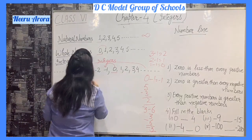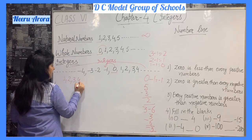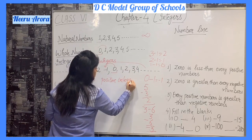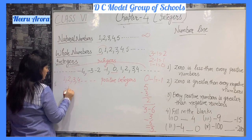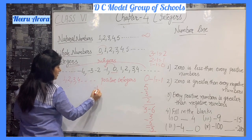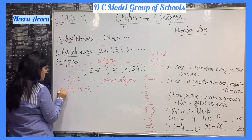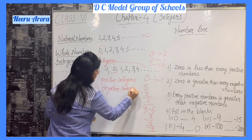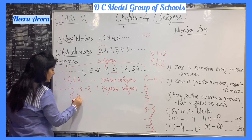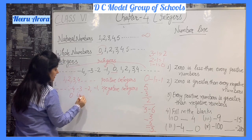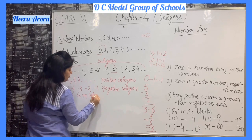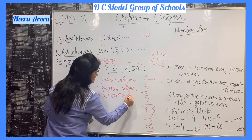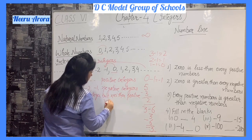The numbers 1, 2, 3, 4, and so on are known as positive integers. Minus 1, minus 2, minus 3, minus 4, and so on are known as negative integers. The number 0 is an integer but neither positive nor negative.